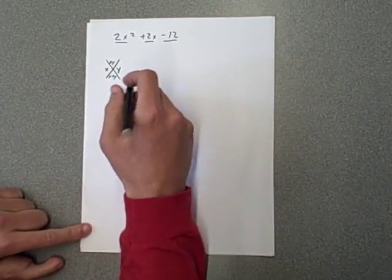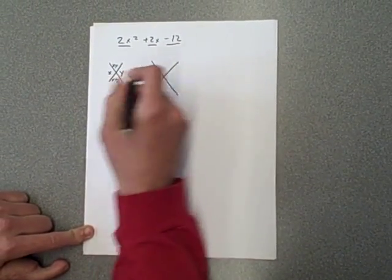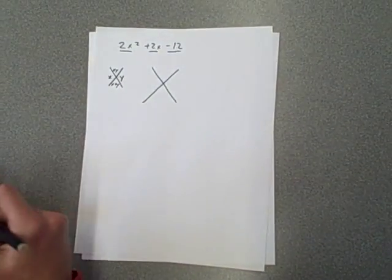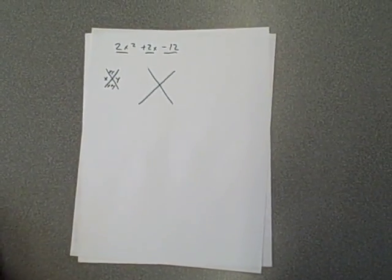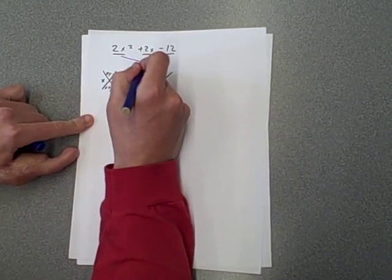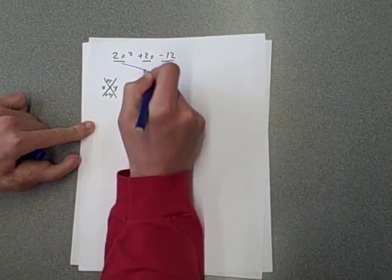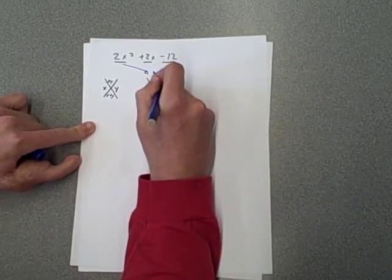So first thing we need to do is draw our x-box. And up in the top here is going to be the 2x squared times the negative 12. So this comes together here, this comes together here, and we get negative 24x squared.